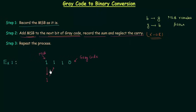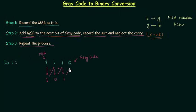One plus one gives us zero — zero is the sum and one is the carry. In step number three we repeat the process. So we add this zero with the next bit one: zero plus one gives us one. Then we add that one with the next bit zero: one plus zero gives us one as the sum and zero as the carry.